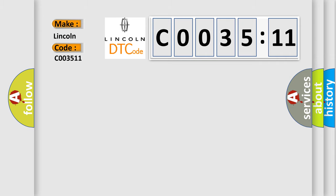The basic definition is HO2S12 Bank 1 Sensor 2 Circuit Low Input. And now this is a short description of this DTC code.